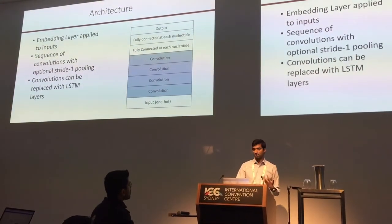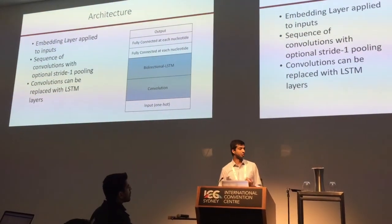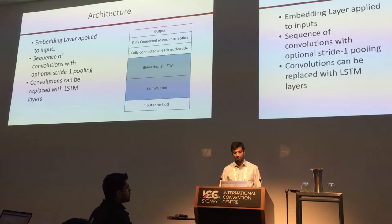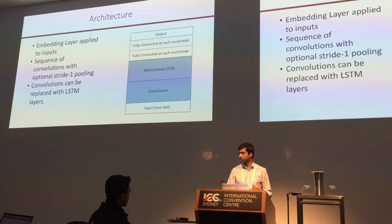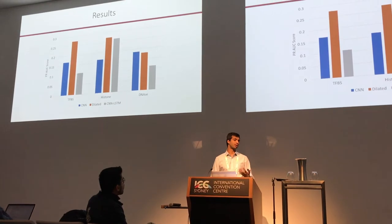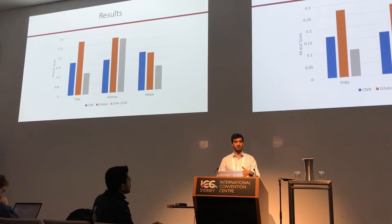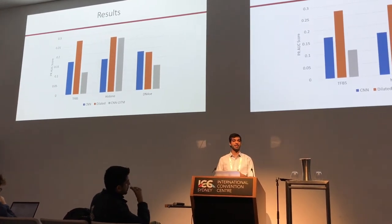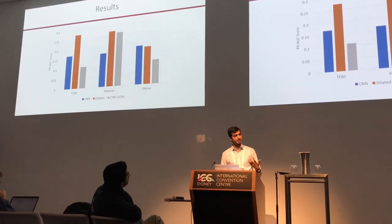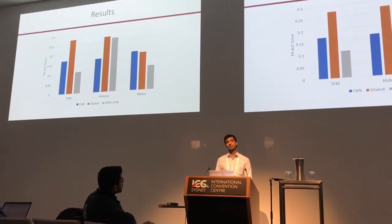We can again replace these convolutions with dilated convolutions and with the hybrid convolutional LSTM approach. These are analogous to the earlier approach, though in this case we have much longer dependencies. By using an alternative model that's sparser and captures long-term dependencies, we give up some ability to model the narrow space really effectively, so the CNN, which has a dense model over a narrower receptive field, does better.